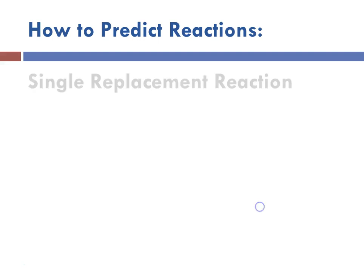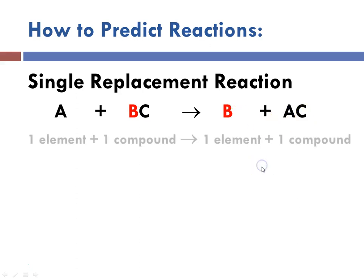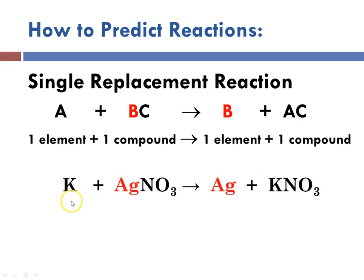In predicting single replacements, the first step is recognizing that it's an element with a compound, and that element is going to try to kick out something in the compound — in this case the cation — to give us that element and a different compound. So one element plus one compound gives you a different element and a different compound.